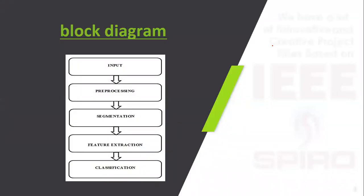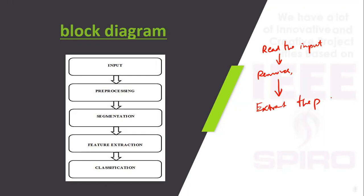Looking at the block diagram: first, input means reading the input images into MATLAB. Then pre-processing means processing the input image — for example, removing noise, resizing, and color conversion. Segmentation means in the total image we focus only on the cars or vehicles, in order to extract the vehicles — this process is called segmentation, which extracts a particular part from an image. After segmentation, the segmented images are processed by algorithms — this is called feature extraction, which calculates values from the segmented images.